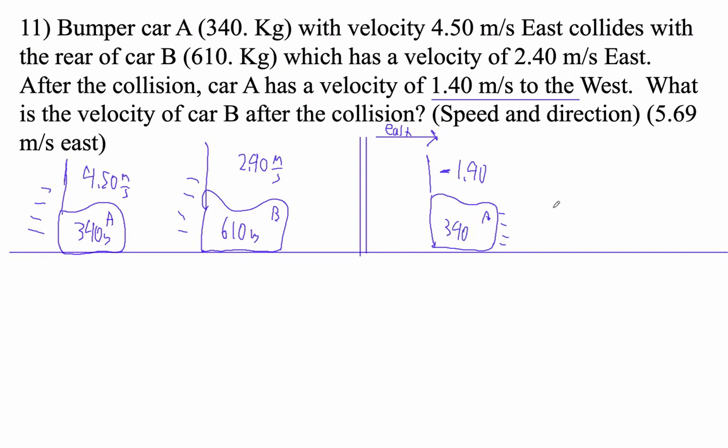And the reason that I'm making it negative is that east is positive and this guy's going to the west. And then the question is, how fast is Duggan's bumper car going?